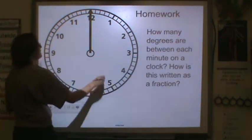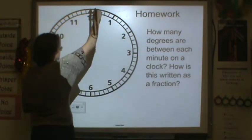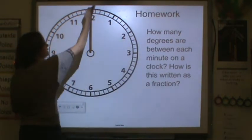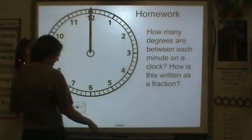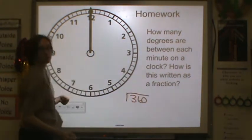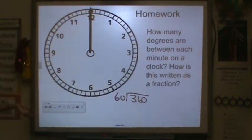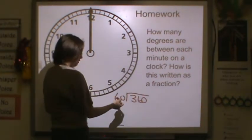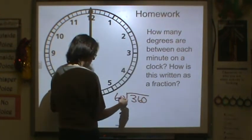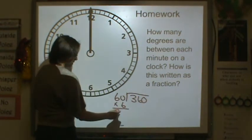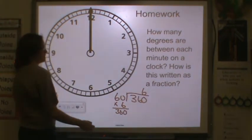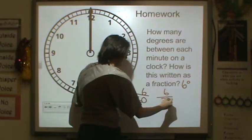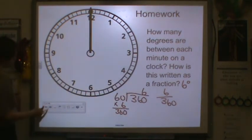How many degrees would be between each minute on a clock? So if we think about it, if we took each minute on our clock and we turned it, how many minutes would there be? So here would be a minute, here would be a minute. There would be 60 minutes. Well, my total amount of degrees is 360. If I divided 360 by 60, because that's how many minutes there are, just like we divided by how many hours there are around the clock, we would get 6. So there would be 6 degrees in between every single minute. That written as a fraction would be 6 out of 360.